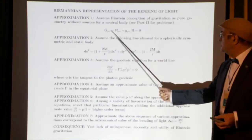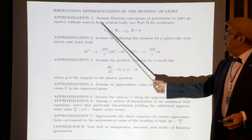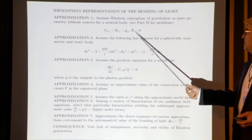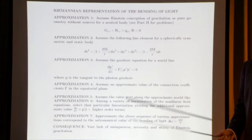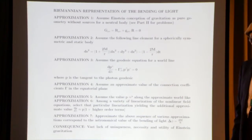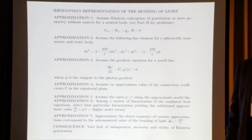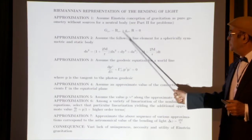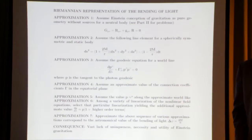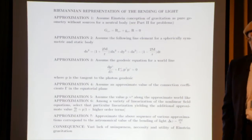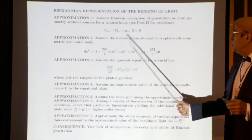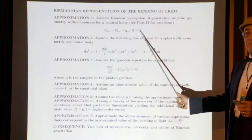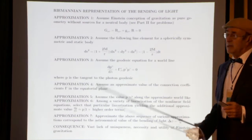Let's start with the first assumption — the basic equations of Einstein's gravitation, representing the very essence of his conception of gravitation: namely the reduction of gravitation to pure curvature with no sources. On the right-hand side, there is zero.